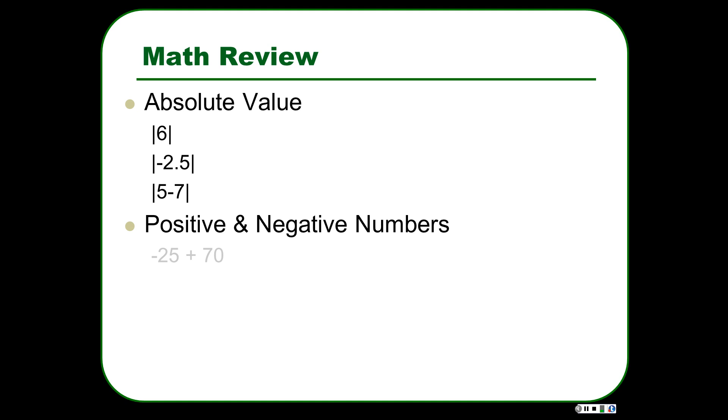You need to be able to deal with positive and negative numbers, sometimes getting a little tricky and flipping around. So negative 25 plus 70 is the same as 70 minus 25. That's something you should be able to figure out. You might be asked sometimes, is something like, is negative 3 greater than negative 2? The answer is no, it's not, because negative 3 is further to the left on the number line.